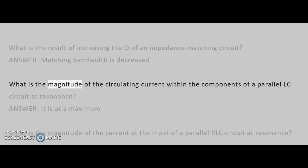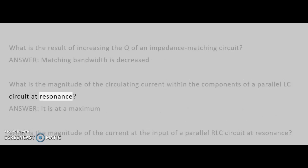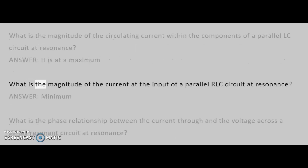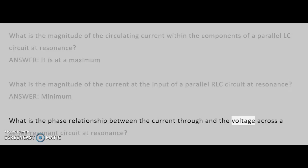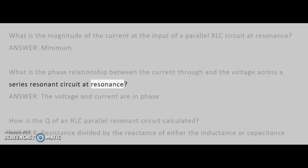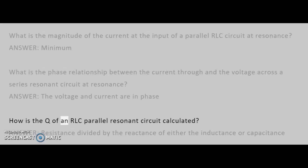What is the magnitude of the circulating current within the components of a parallel LC circuit at resonance? Answer: It is at a maximum. What is the magnitude of the current at the input of a parallel RLC circuit at resonance? Answer: Minimum. What is the phase relationship between the current through and the voltage across a series resonance circuit at resonance? Answer: The voltage and current are in phase.